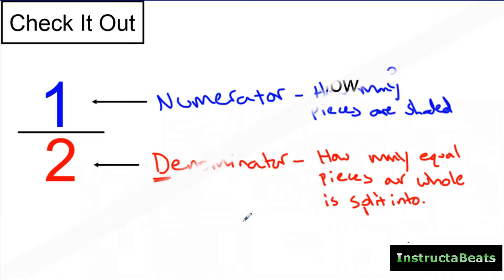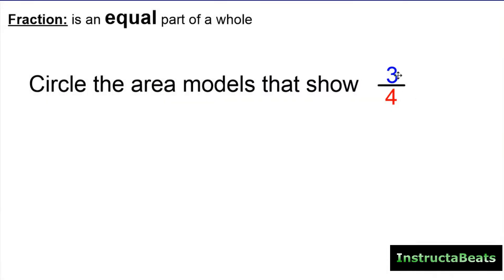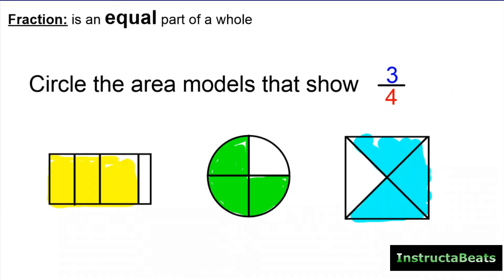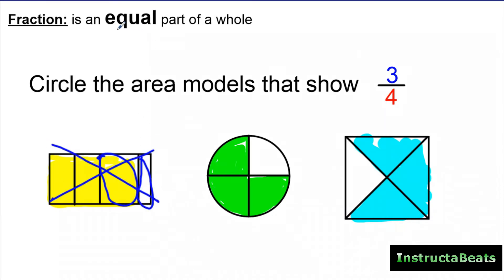Let's take a look at a couple examples. Here we have the fraction 3 fourths. Our denominator tells us that our whole is going to be split into four equal groups, and our numerator tells us how many are going to be shaded. We have three different area models, and we want to circle the ones that show 3 fourths. Here I see four equal pieces with three shaded in, but notice this part is not the same size as this part, so this does not represent 3 fourths because it did not have equal parts.